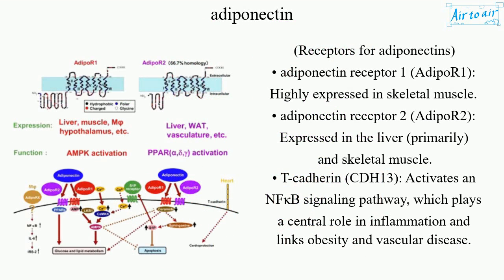Receptors for adiponectin include: Adiponectin receptor 1 (AdipoR1), highly expressed in skeletal muscle; Adiponectin receptor 2 (AdipoR2), expressed primarily in the liver and skeletal muscle; and T-cadherin (CDH13), which activates an NF-κB signaling pathway that plays a central role in inflammation and links obesity to vascular disease.